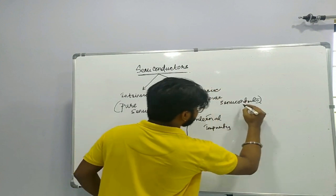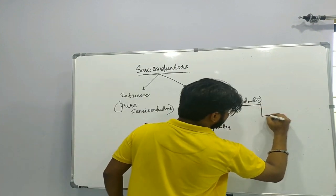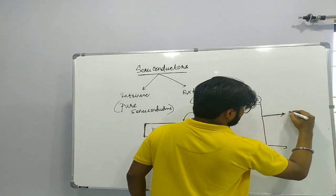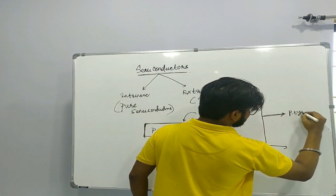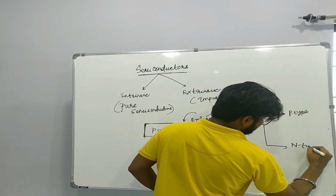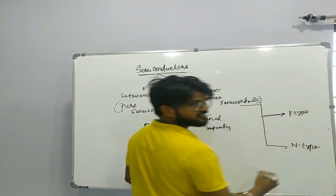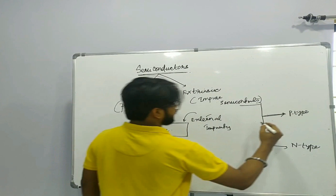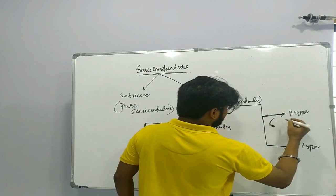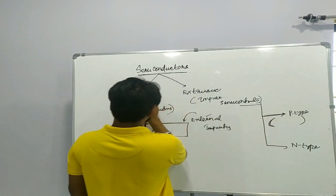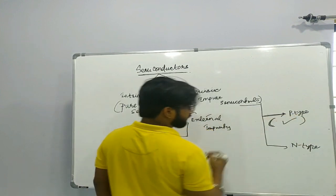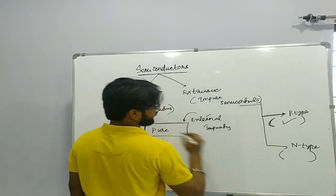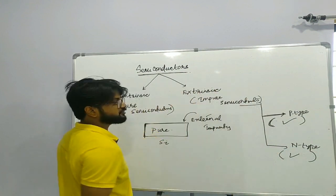Extrinsic semiconductors are again divided into two parts: P-type and N-type — and here comes actual electronics. When a certain kind of impurity is added to an intrinsic semiconductor, it becomes a P-type semiconductor. When a different type of impurity is added, it becomes an N-type extrinsic semiconductor.